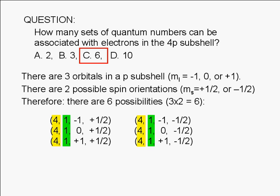The three possible values of M sub L are negative 1, 0, and positive 1. And for each of these cases, the spin quantum number can be positive 1 half or negative 1 half.